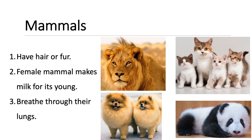Mammals are animals with a backbone. A mammal is an animal that has hair or fur. A female mammal makes milk for its young, and they breathe through their lungs. This is a cat — a cat is an animal with a backbone. All of these cats have fur. The baby cats, or kittens, drink milk from their mother, and they all breathe through their lungs.